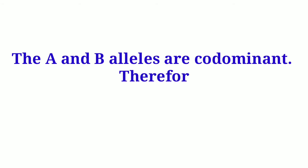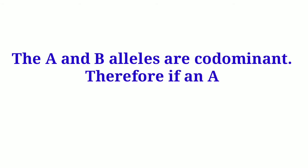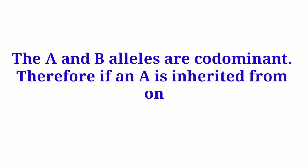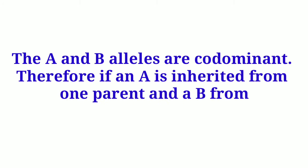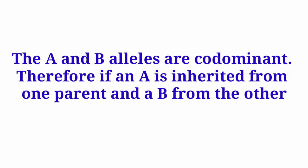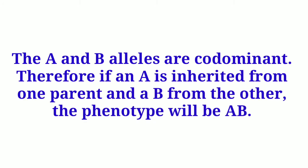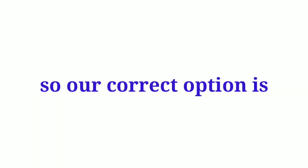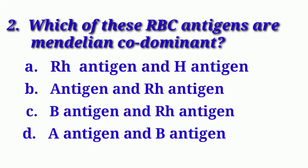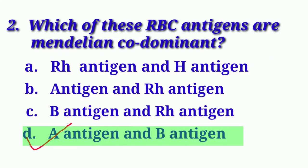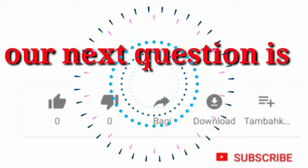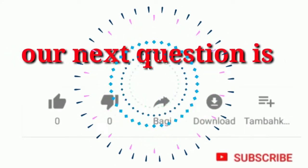Therefore, if an A allele is inherited from one parent and a B allele from the other, the phenotype will be AB. So our correct option is Option D: A Antigen and B Antigen.